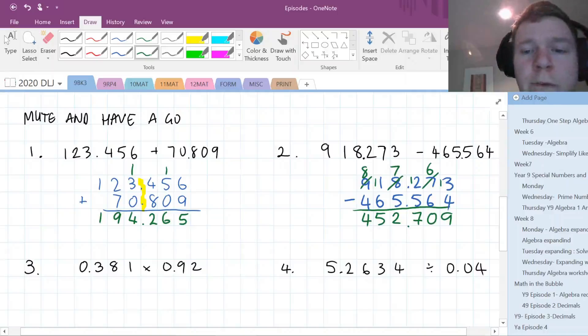452.709. We got a few getting it. Well done, Precious. Well done, Merrin. Alright.